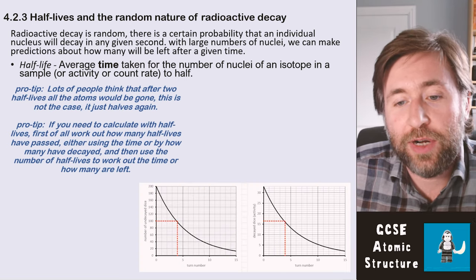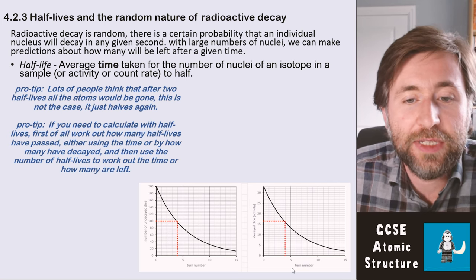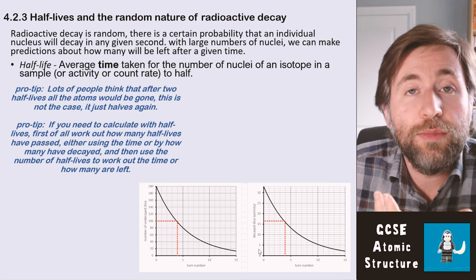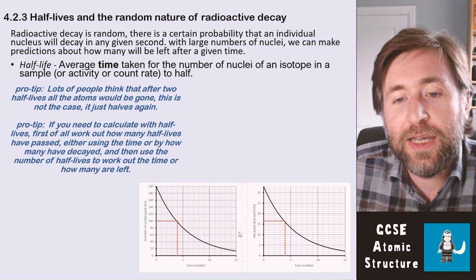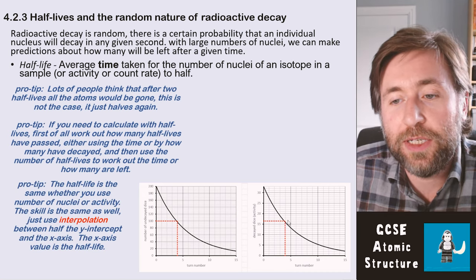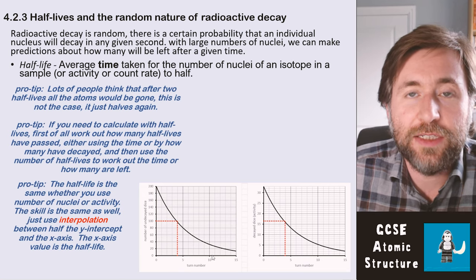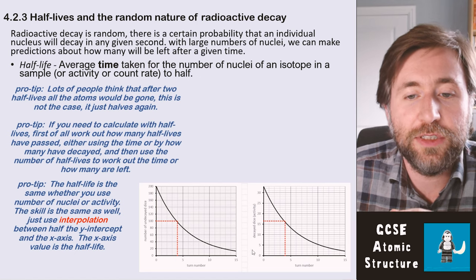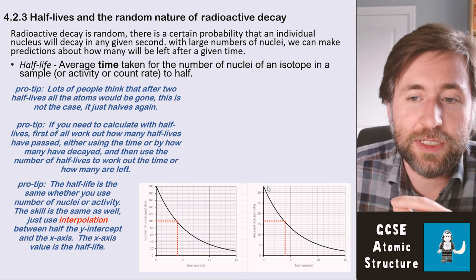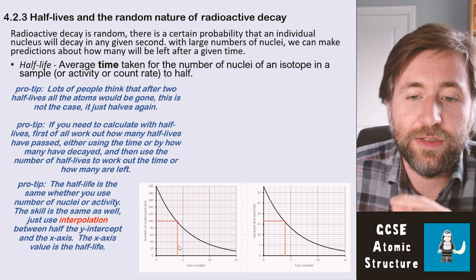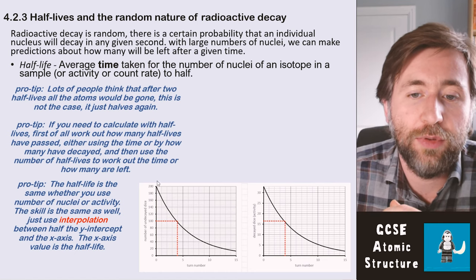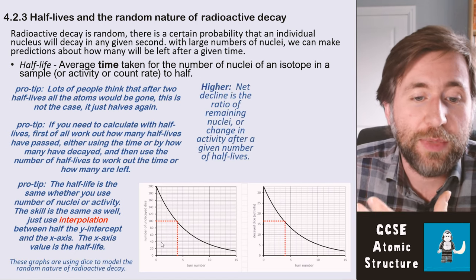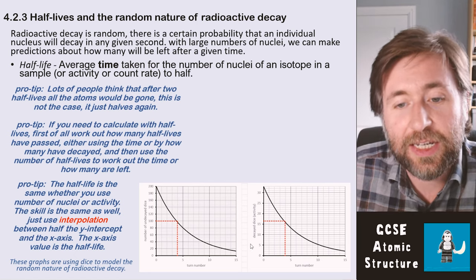Typically, this is going to be displayed on graphs. These two graphs are different, but they're for the same event. The graph on the left shows the number of undecayed dice, and the graph on the right shows the actual number of dice that decay every turn — but you can see the pattern is the same. When we use interpolation — that's what the red dotted lines mean — we actually get the same value for the time taken for whatever that number is to half. When given a graph like this and asked to determine the half-life, you use interpolation: take whatever the y-intercept is, halve it, go across to the line and then down to the x-axis and read off the time taken for that value to half. That's the half-life. It doesn't matter whether you're using number or activity — you should get the same half-life.